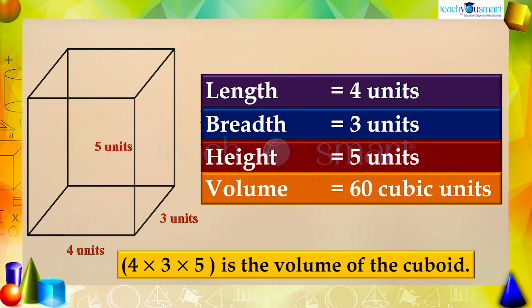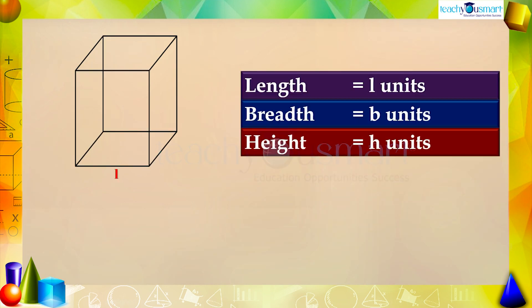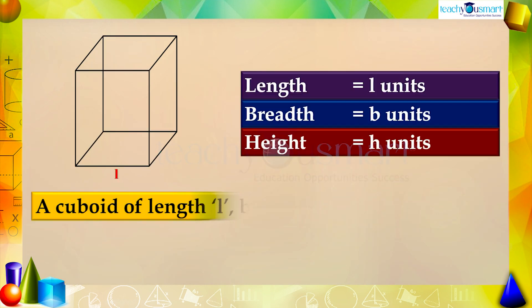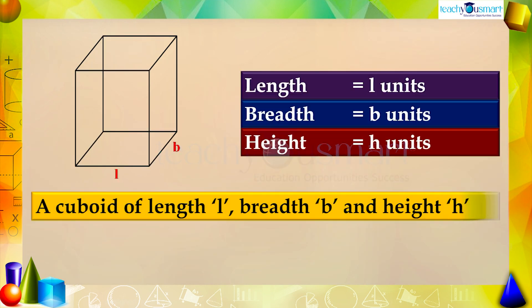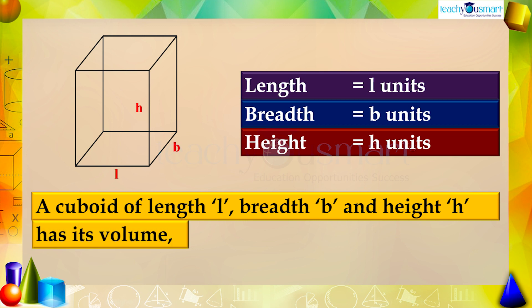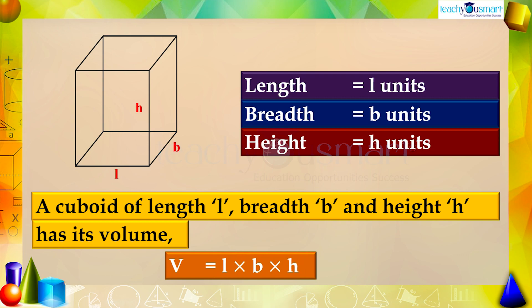The length is four units, breadth is three units, and height is five units, giving volume as sixty cubic units — that is, four multiplied by three multiplied by five. In general, a cuboid of length L, breadth B, and height H has its volume equal to L multiplied by B multiplied by H.